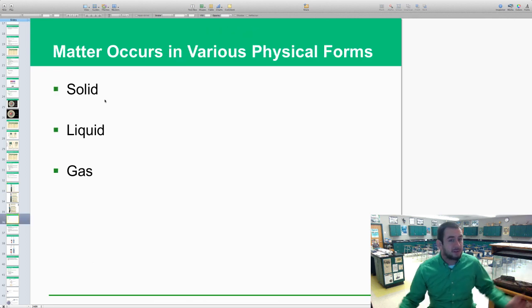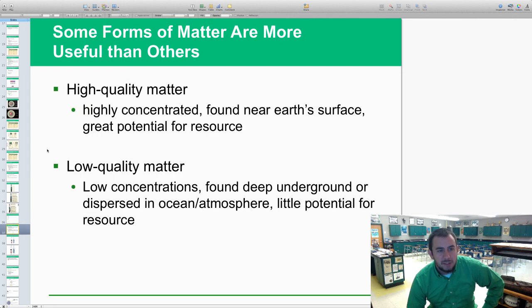Matter occurs in various forms—going back to physical science. We're hitting them all today: solid, liquid, and gas. Those are our main forms that we'll talk about. We have some different types of matter: high quality matter and low quality matter. Not sure if you hit this in physical science, but this is a good refresher for you.